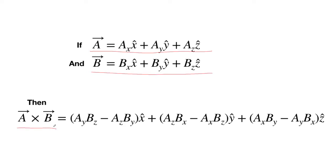then A cross B has this rather complicated form. A_y B_z minus A_z B_y in the X direction. A_z B_x minus A_x B_z in the Y direction and so on.